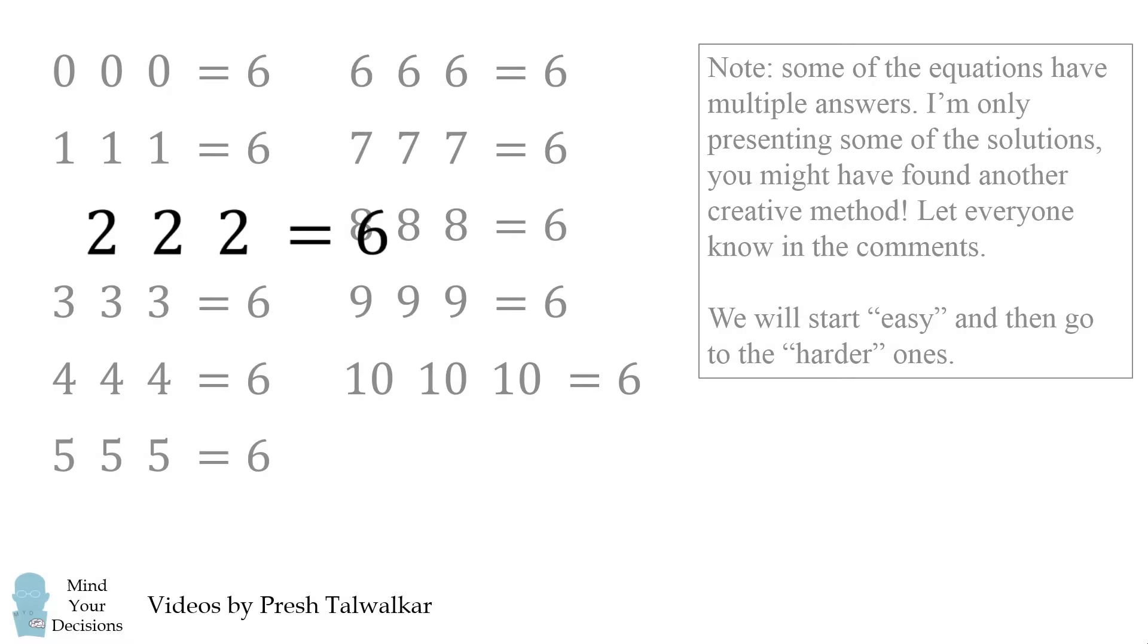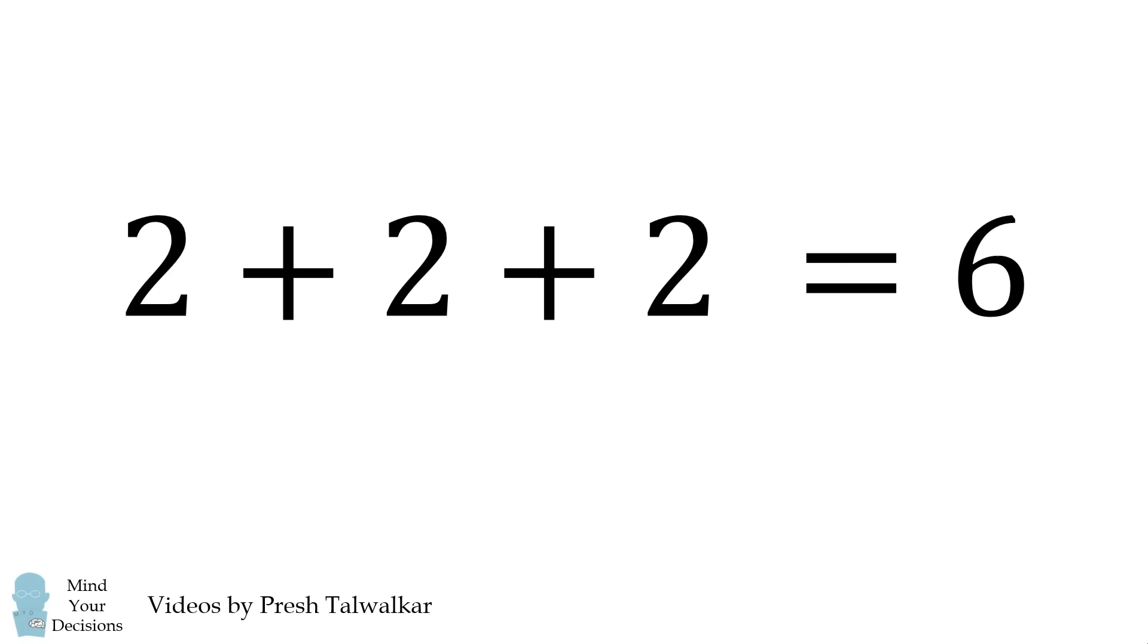Let's start out with 2 2 2 to equal 6. We can solve this by using the equation 2 plus 2 plus 2 is equal to 6. So, we've already figured out 1.